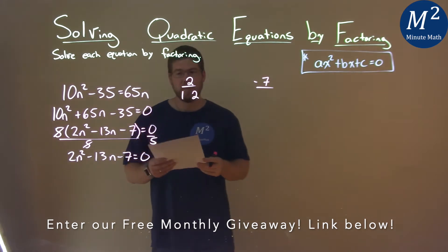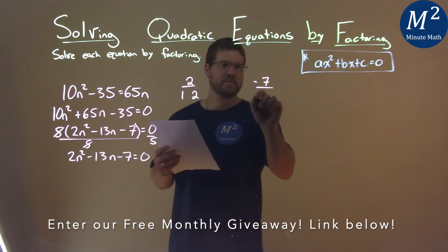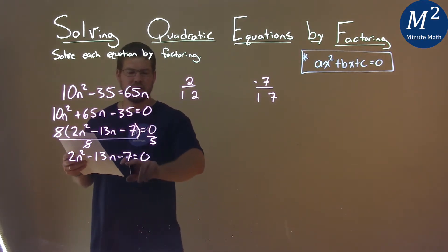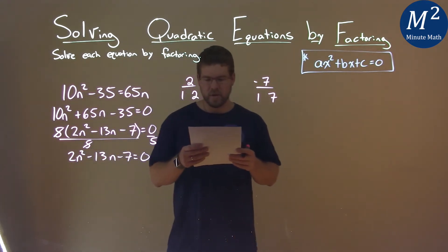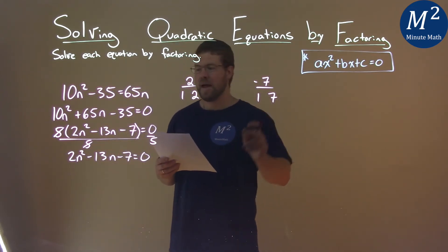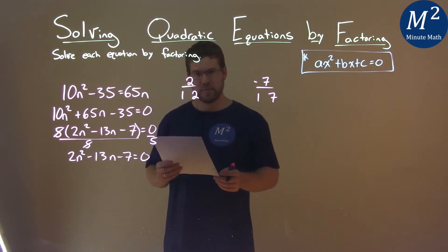Two numbers that multiply to be 7, let's deal with positive 7, is just 1 and 7. But we know that our b value is negative, and our c value is negative. So one of these numbers will have to be negative.